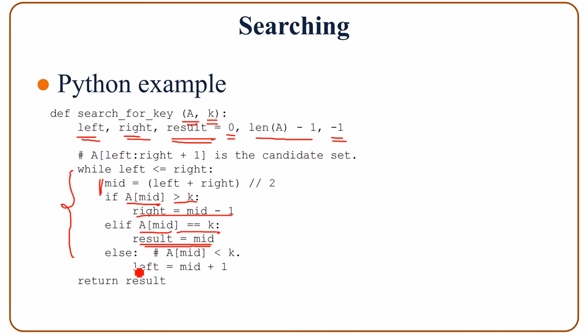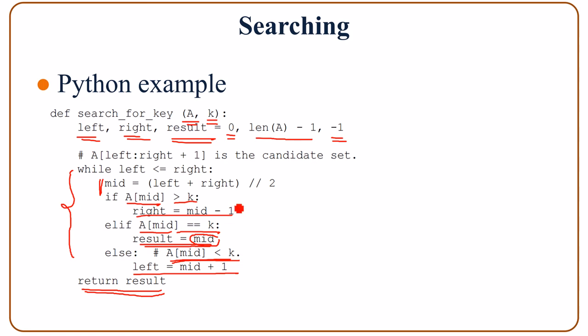And if k is actually greater than the element at the middle of the array, a[mid], then in the next iteration left is set to mid plus 1, meaning we search for k in the second half of the array. And finally, we return the result. If the result is mid, then k is found. Otherwise, it returns negative 1, which means not found.